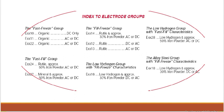Index to electrode groups: Group 1 includes E7010, E7011, E7018 — organic and rutile types. E7024, E6024, E6027 are rutile with approximately 50% iron powder, AC or DC. The low hydrogen group includes E7018 (low hydrogen) and E7028 (low hydrogen with iron powder). The alloy group includes E7018 alloy types. You need to remember which group each electrode belongs to.